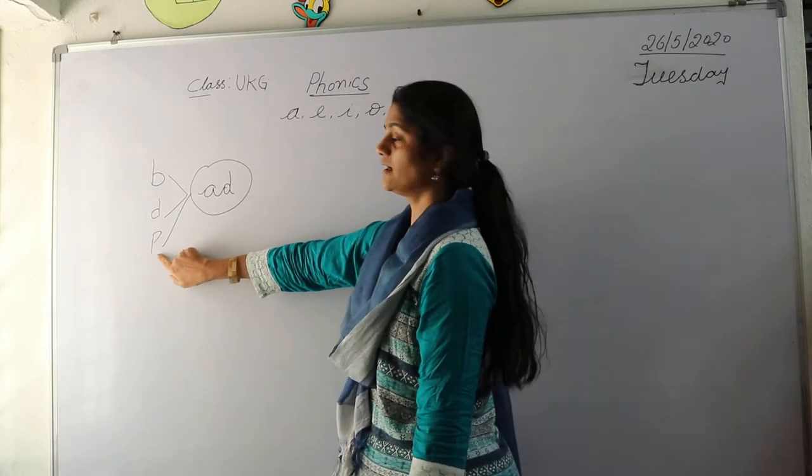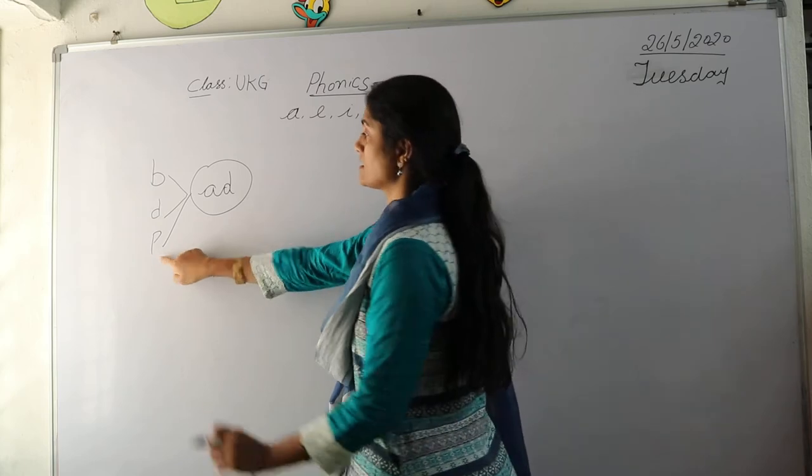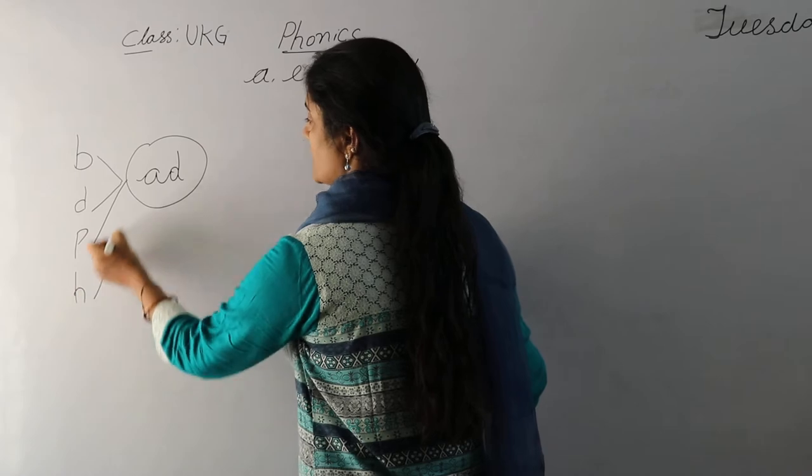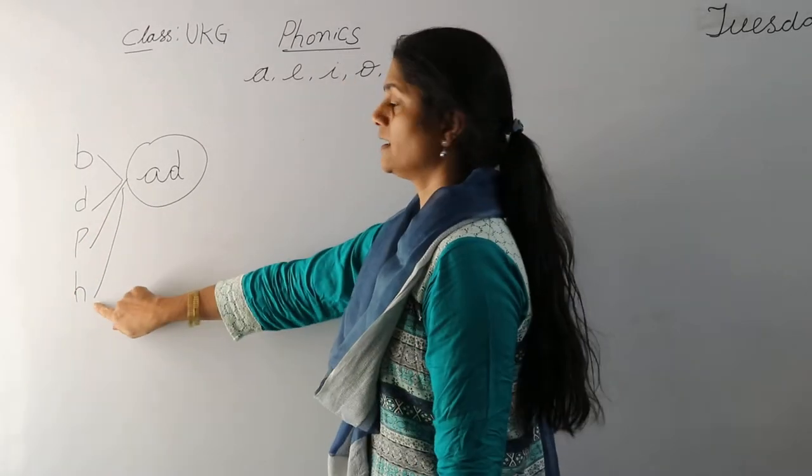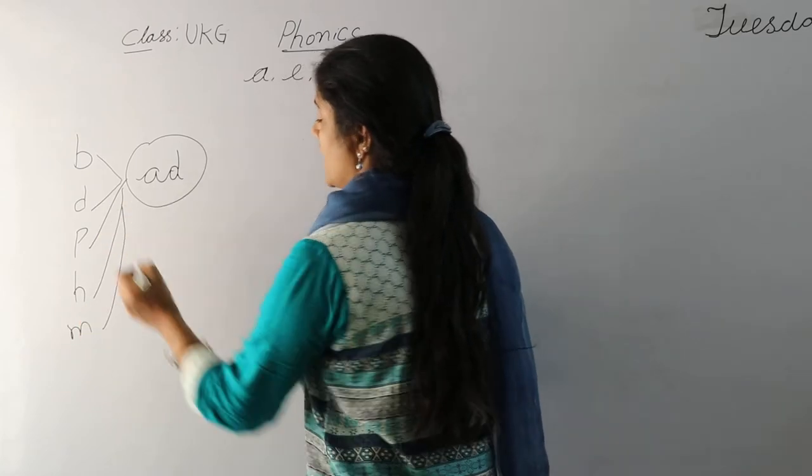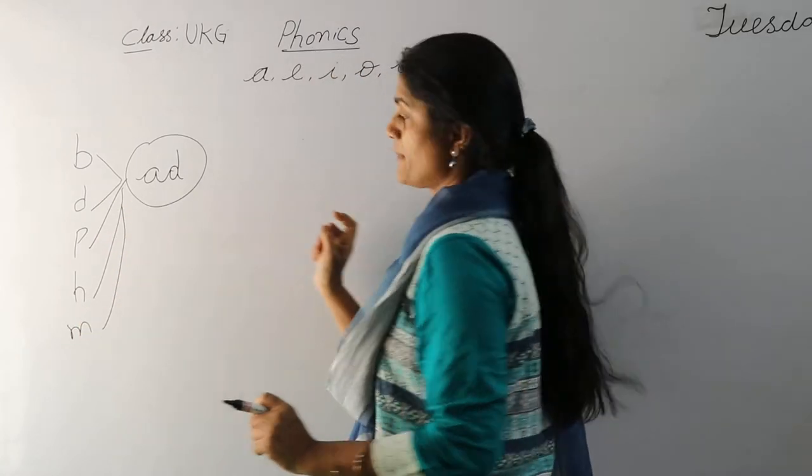What do you see here? That's right. That's B. B-ad, bad. And the next one is H. H-ad, had. And the next one, M. M-ad, mad.